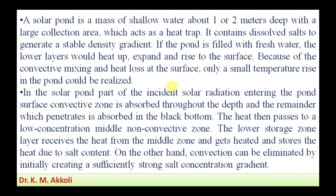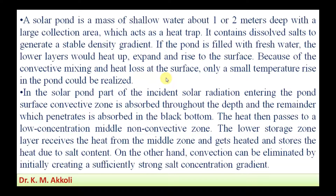A solar pond is a mass of shallow water — up to one to two meters deep — with a large collection area, which acts as a heat trap. It contains dissolved salts to generate a stable density gradient: the top layer has lower density and the bottom layer has higher density. If the pond were filled with fresh water, the lower layer would heat up, expand, and rise to the surface by convective mixing, resulting in only a small temperature rise.